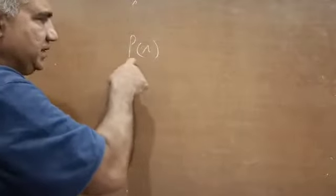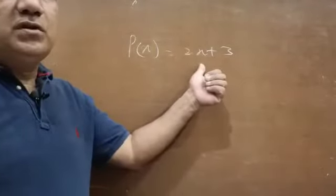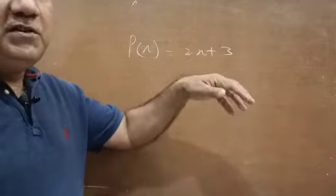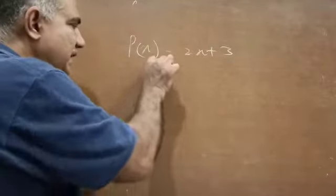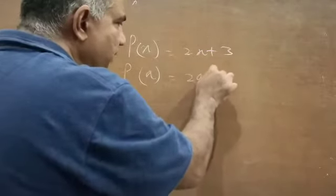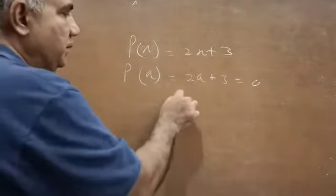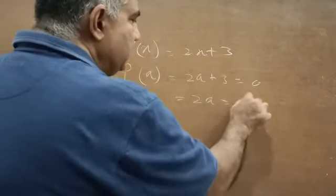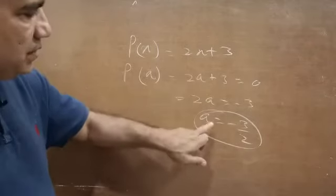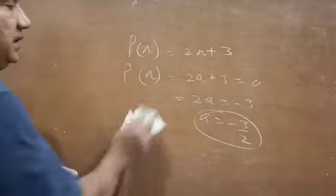A polynomial in x is p(x), for example 2x + 3. We said that the zero or root of a polynomial is that value of the variable which, when substituted into the polynomial in place of the variable, reduces the polynomial to zero. So if 'a' is the zero, then 2a + 3 = 0, giving us a = -3/2. So -3/2 is the zero of this polynomial.